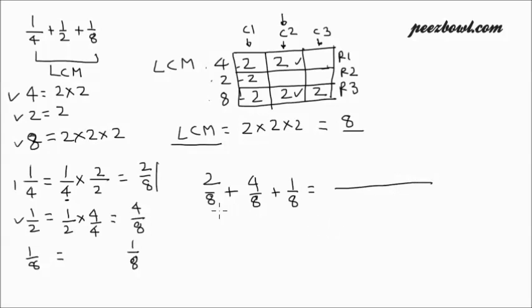So whenever we are adding three fractions, or more than three fractions, where we have same denominator, for the resulting fractions, we need to write same denominator, and for the numerator place, we need to simply add individual numerators.